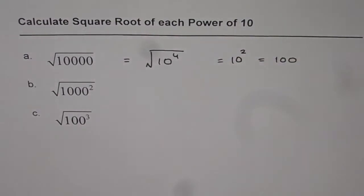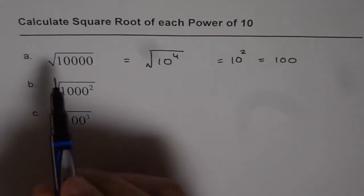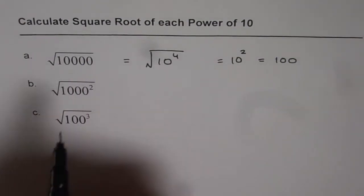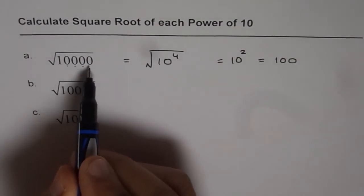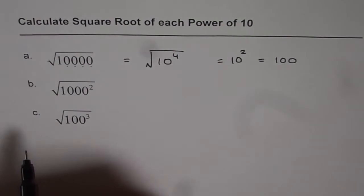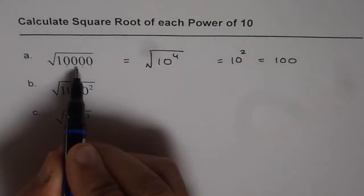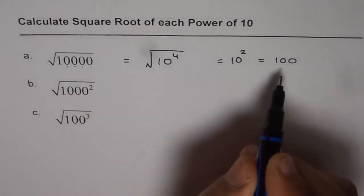Right, that's one way of looking at it. Second, you can write the number as multiples of 10. You'll get 1, 2, 3, 4 zeros. When you find square root, you'll get hundred times hundred, right? So hundred will be your answer. That's another way of looking at it.